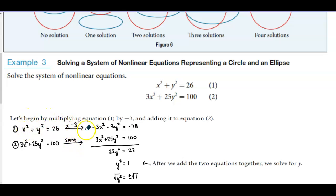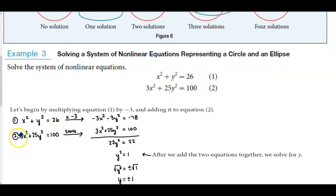Negative 3 times x² is −3x². Negative 3 times y² is −3y². And negative 3 times 26 is −78. Then we keep equation 2 the same.